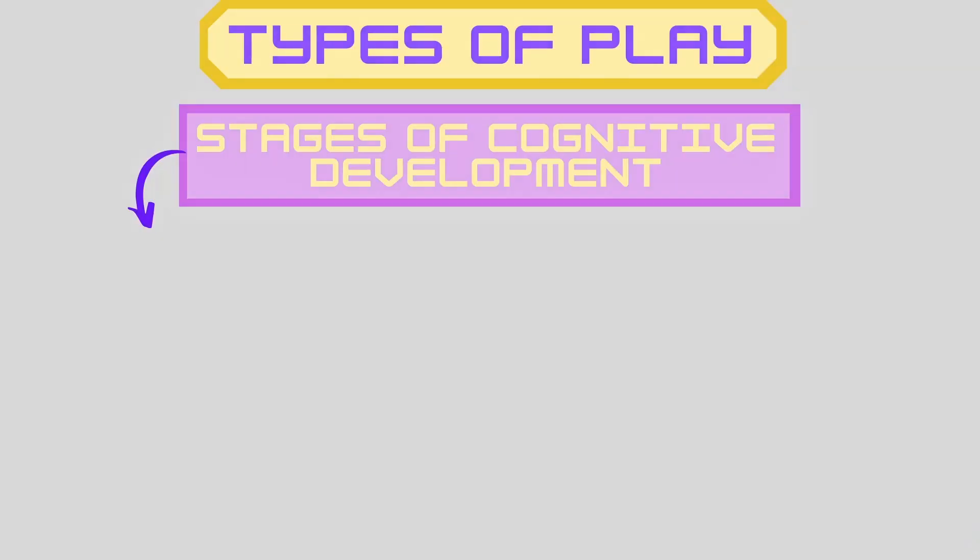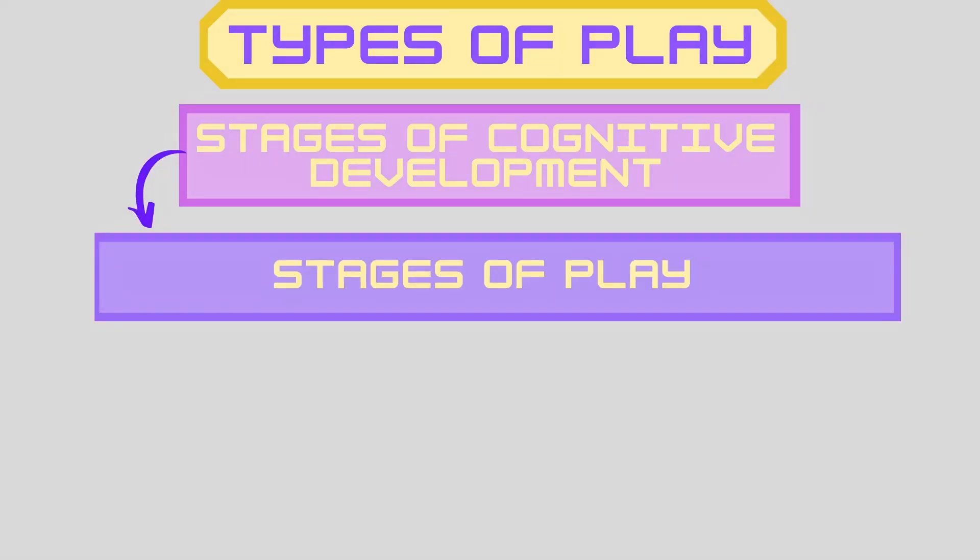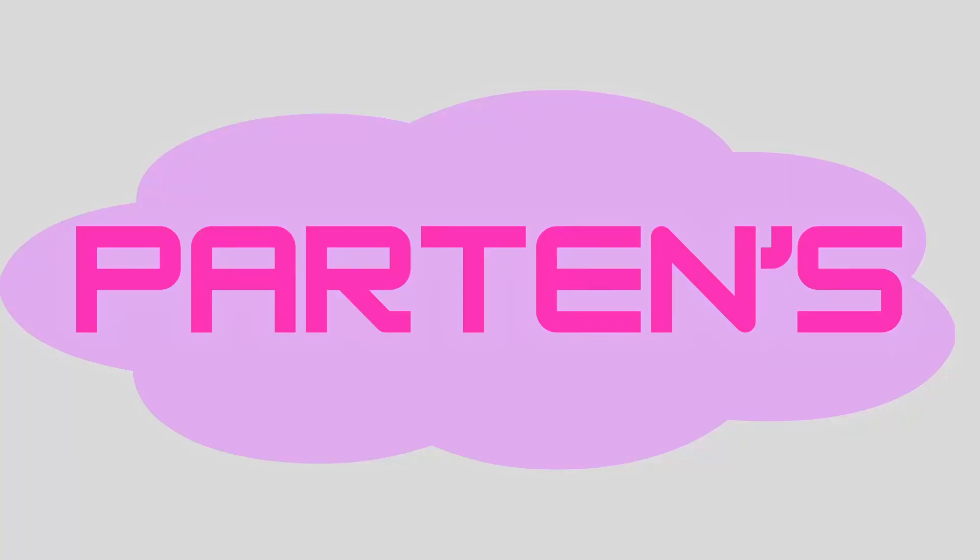We're going to briefly discuss the stages of play. In the different stages of cognitive development, children will engage in different stages of play. Wherever the child is in their cognitive development will depend on the type of play that they engage in. When we're thinking of the stages of play, we think about Parten's six stages of play.